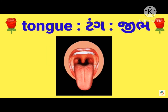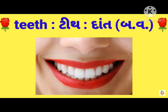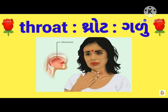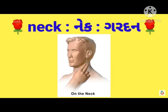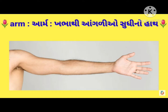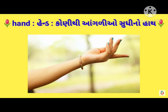Tongue — jeeb. Teeth — daat. Throat — garu. Neck. Arm — khabha thi aangriyo sudi no bhaag. Hand — koni thi aangriyo sudi no bhaag.